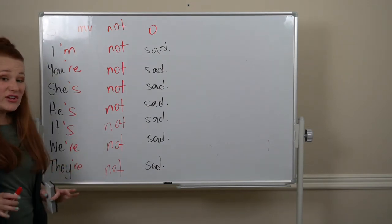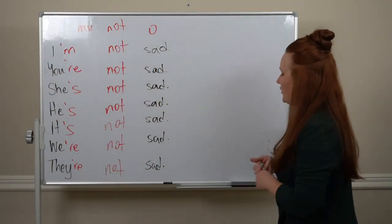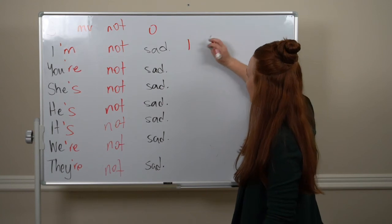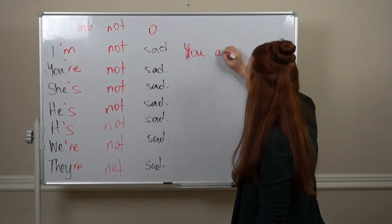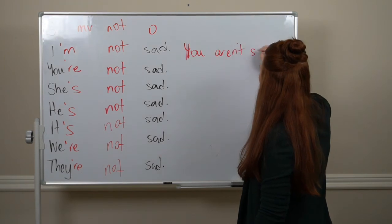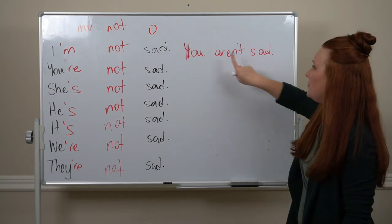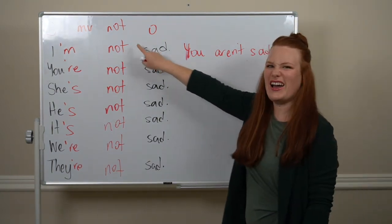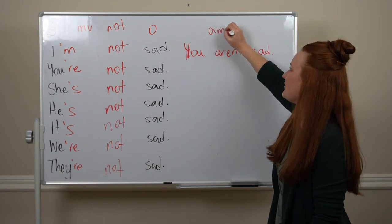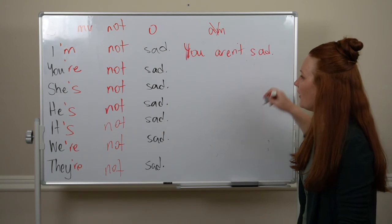But you also get another option. You can also write 'you aren't sad', where we contract 'to be' and 'not'. But we can't do this with 'am'. It doesn't work. 'I amn't sad'—it doesn't work. But you aren't sad.